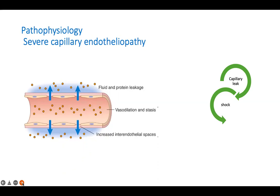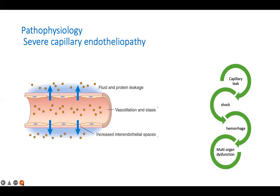When there is shock and hypoperfusion, DIC occurs — microthrombi are formed, consumptive coagulopathy develops, leading to hemorrhage, multi-organ dysfunction, and death. This is how capillary leakage and endotheliopathy damage a patient with severe dengue.